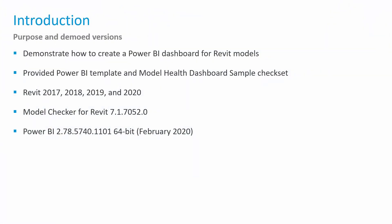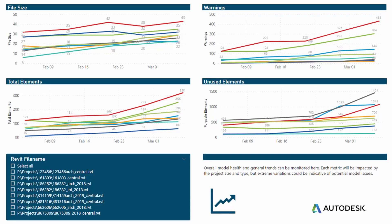The original one focused on a single Revit project over a period of time. This takes it to the next step, letting you check and monitor health between different projects over time. There is a provided Power BI template and an already-created model health dashboard sample check set. The template has been designed for Revit 2017, 2018, 2019, and 2020, running on the current version of Model Checker. Ideally, once we're done with this video, you'll be able to generate reports like this inside of Power BI — trending data for multiple Revit models over time.